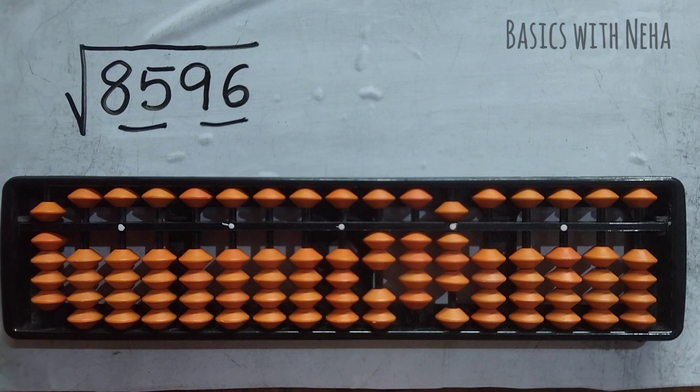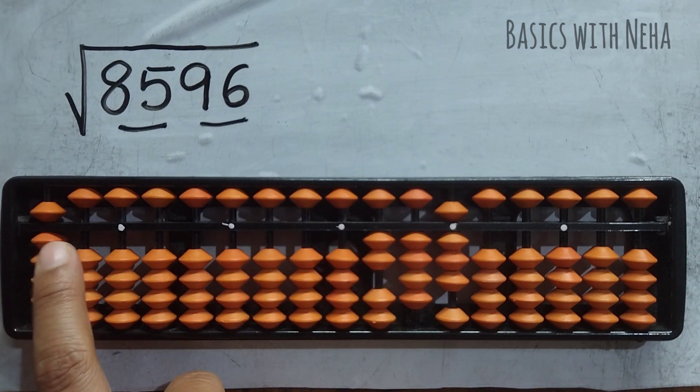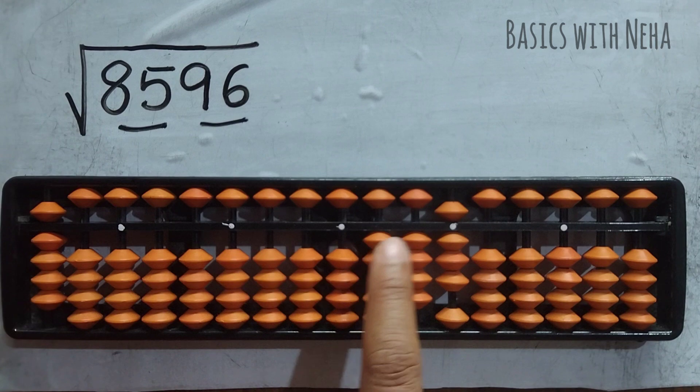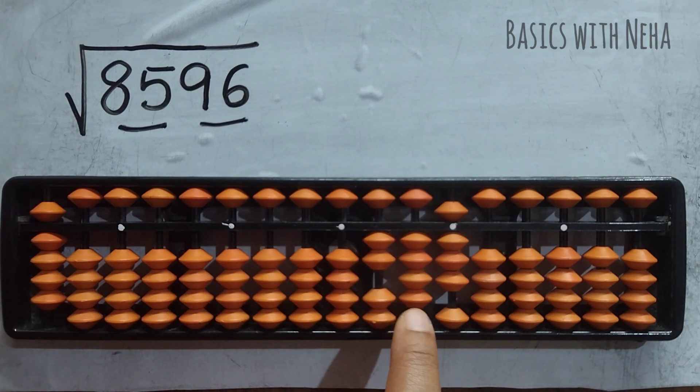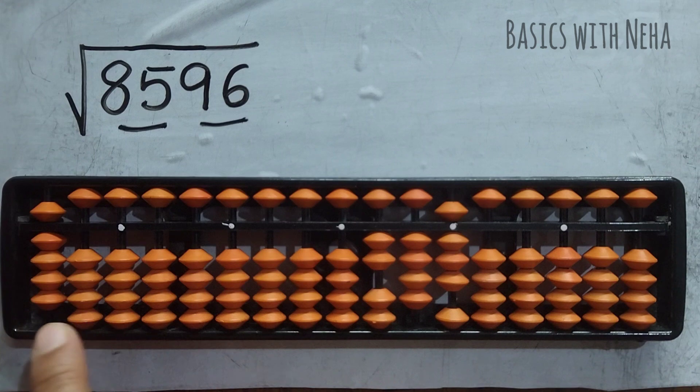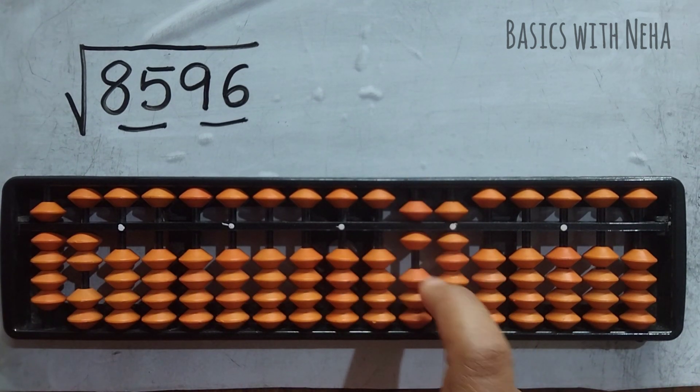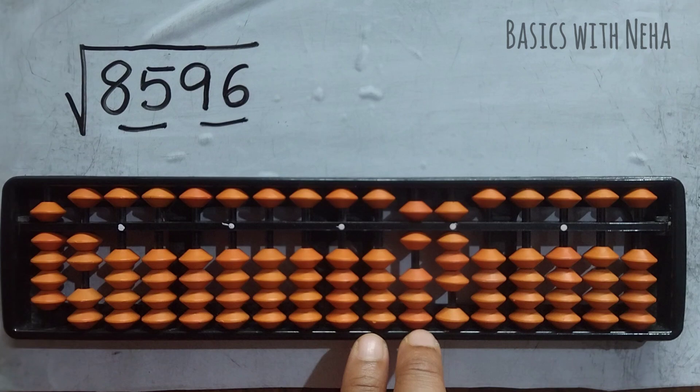Again, I've got a new number. Now this number, I have to multiply this number with some number in order to get this or near to this number. I have to consider two rods because this rod has only two beads. So 9, 2 squared is 18, 1 and 8.